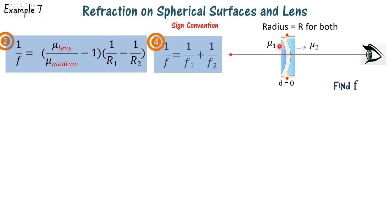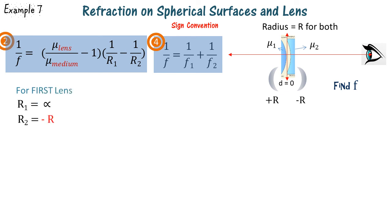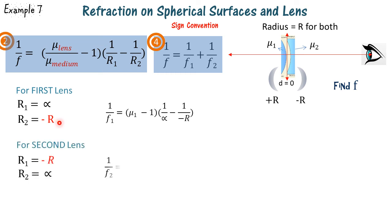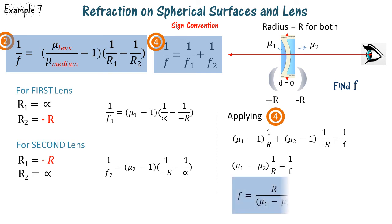Here we have a plano-convex lens and a plano-concave lens touching each other. The refractive index of the convex lens is mu 1 and of the concave lens is mu 2, and we must find the combined focal length. For the convex lens, R1 is infinity and R2 bulges towards the eye so is taken as minus R. For the concave lens, R1 bulges towards the eye as minus R and R2 is infinity. We then apply the fourth equation to find the focal length.